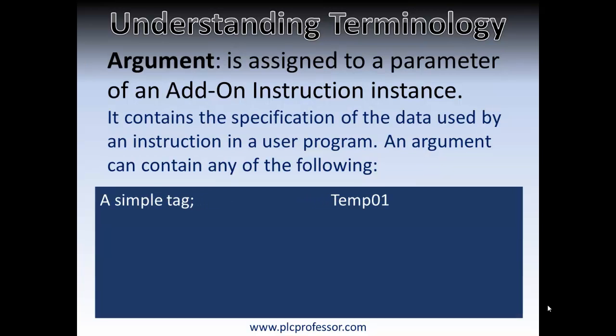An argument can contain any of the following. In RSLogix 5000 terms it could be a simple tag. A tag name, or tag name pointer, points to a memory location where there is a value stored. So temp01, that could be temperature 1, is a pointer that points to the memory location where you would find a floating point, a real, a double integer — a value that represents a temperature.